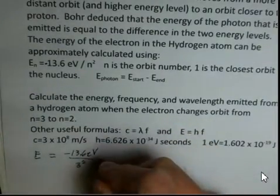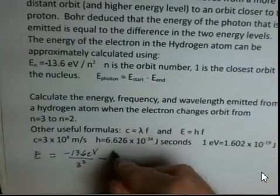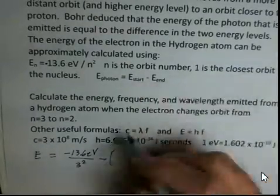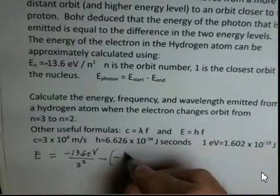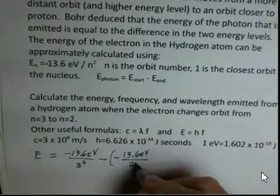Then I always do a subtraction here that says we're going to subtract two energies. And the energy where we end is a minus 13.6 electron volts divided by two squared.